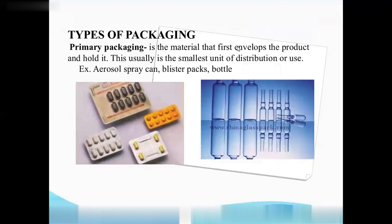There are three types of packing: primary packing, secondary packing, and tertiary packing. Primary packing is the first envelope that contains the drug or direct medicine and holds it. This is usually the smallest unit of distribution or use. For example: aerosol spray cans, blister packs, bottles — these are all primary packing.